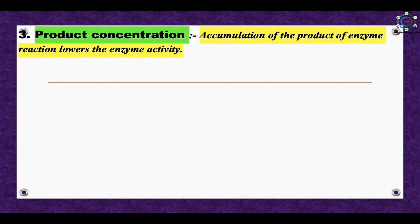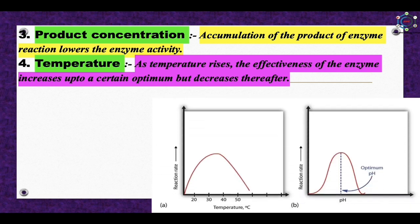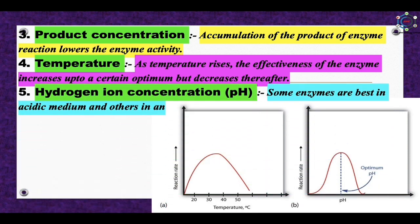Product concentration: accumulation of the product of an enzyme reaction lowers enzyme activity. Normally, products are quickly removed from the site of formation and the reaction doesn't suffer. Next is temperature: as temperature rises, the effectiveness of the enzyme increases up to a certain optimum but decreases thereafter. Most enzymes show maximum activity in the temperature range of about 25–40°C. A rise in temperature increases the kinetic energy of the molecules, so at higher temperatures an increased number of molecules have the required activation energy and can take part in the chemical reaction.